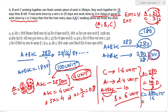A alone will take 280 divided by 2.4, which equals 116 and 2/3 days. So the final answers are: A takes 116⅔ days, B takes 140/3 days, and C takes 175 days. You can easily solve this question using this method.